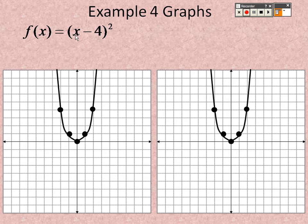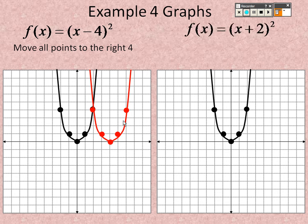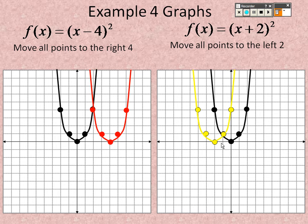For x² with minus 4 inside, the opposite of negative 4 is positive 4, so you move every point 4 spots to the right. For (x + 2)², the opposite is negative 2, so you move all points 2 to the left. Connect the shifted points and there are both graphs.